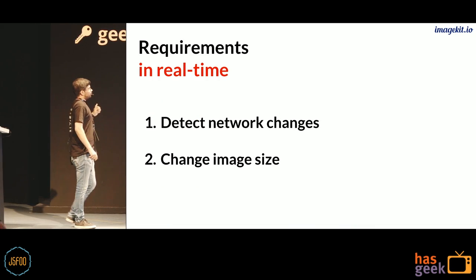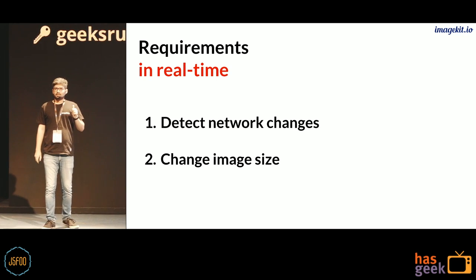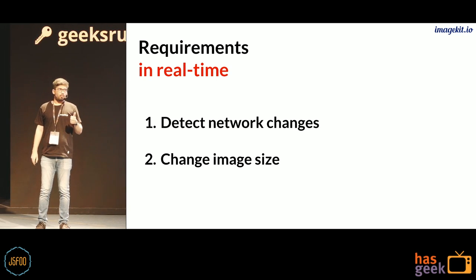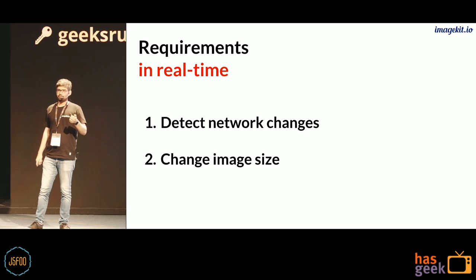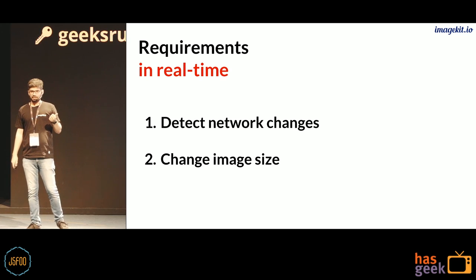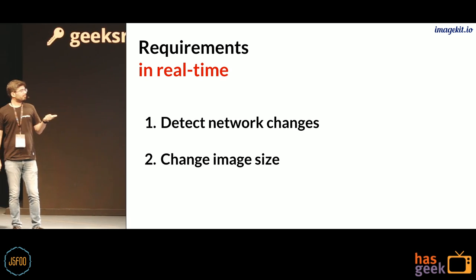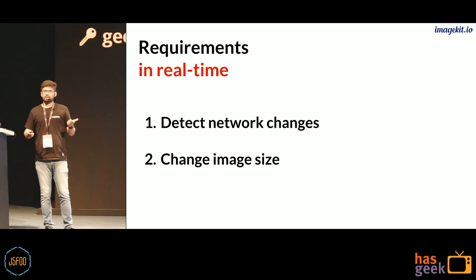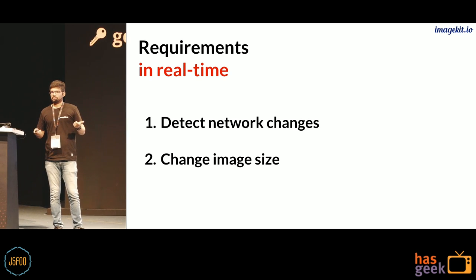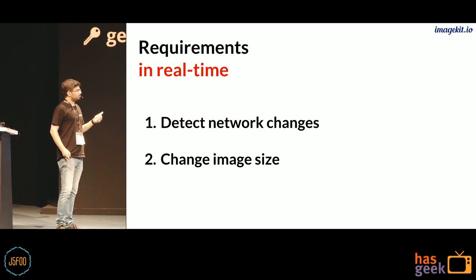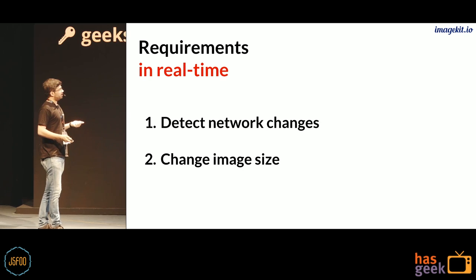So now we have two requirements. One is that we need to determine what network the user is on and detect when that network changes. The second requirement is that when the network changes, we need to change the image size we are sending to them. So let's look at the first part: how do we detect network changes?